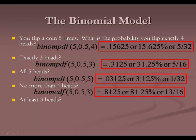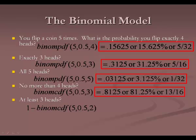At least three heads: at least problems are always done backwards — one minus the probability of the opposite event. The opposite here is up to two heads. So one minus binomCDF(5, 0.5, 2) accumulates up to two heads, and subtracting from one gives 0.5, or 50%, which is one half as a fraction.